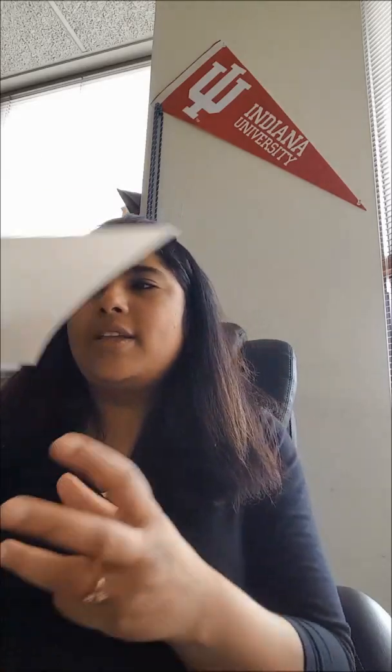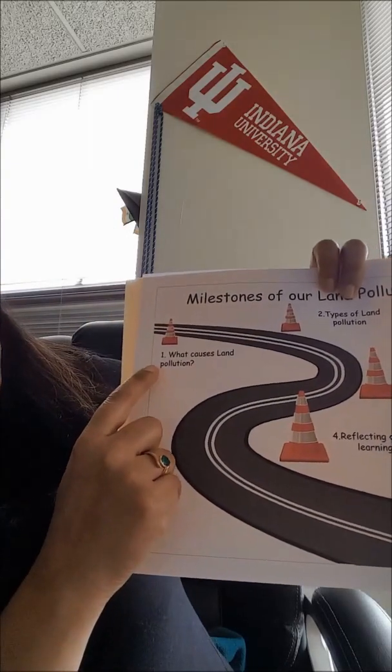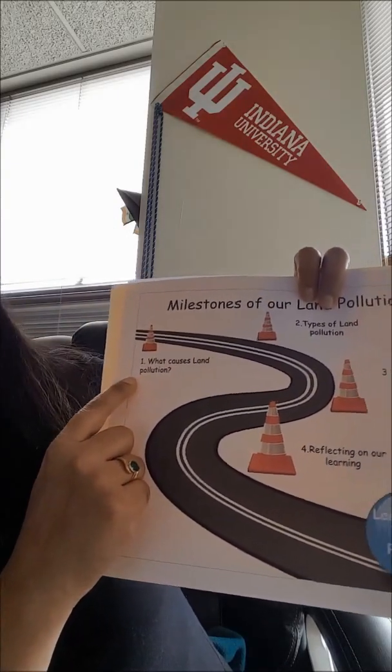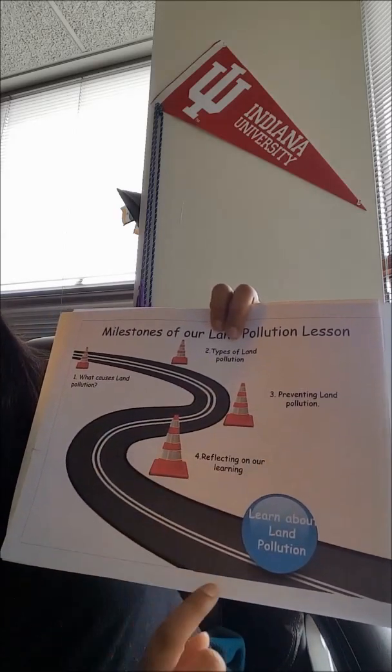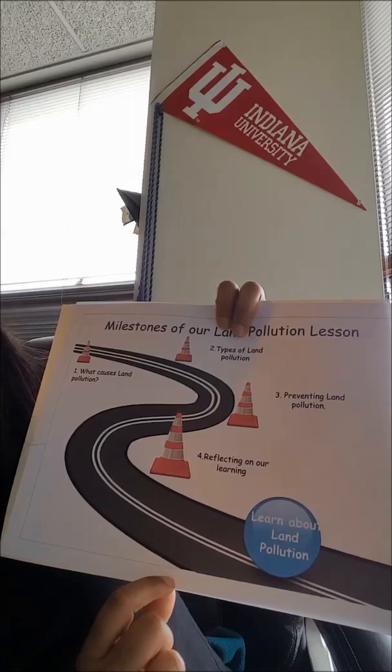So, in this article, we present a unit on land pollution to explain how these two fundamental approaches can be effectively used to facilitate English language learners' learning. The unit was taught in three sessions around the 5E and SIOP components. The three sessions of land pollution were: what causes land pollution, types of land pollution, preventing land pollution, and lastly, reflecting on our learning.